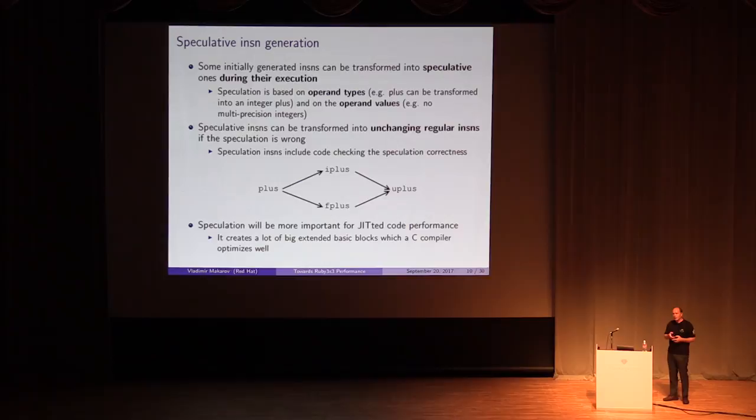It seems that speculative instructions are not profitable because we have also checks, although a smaller number of them, but they will be quite important for JIT code generation because they create so-called extended basic blocks, big ones, and compilers optimize them pretty well.